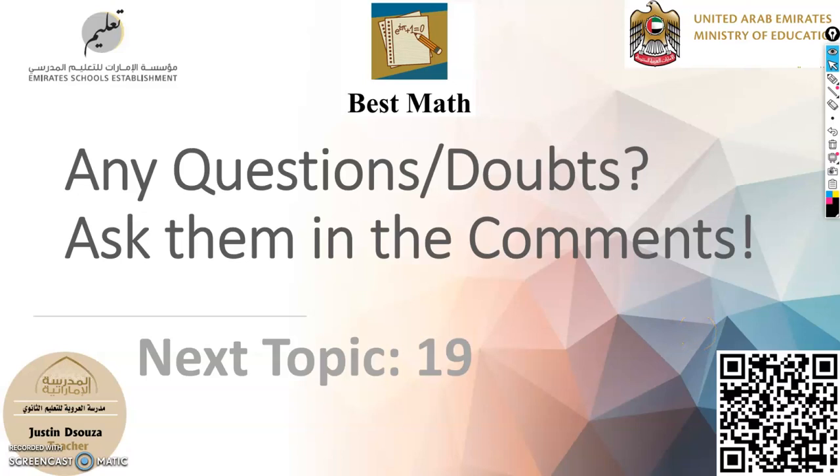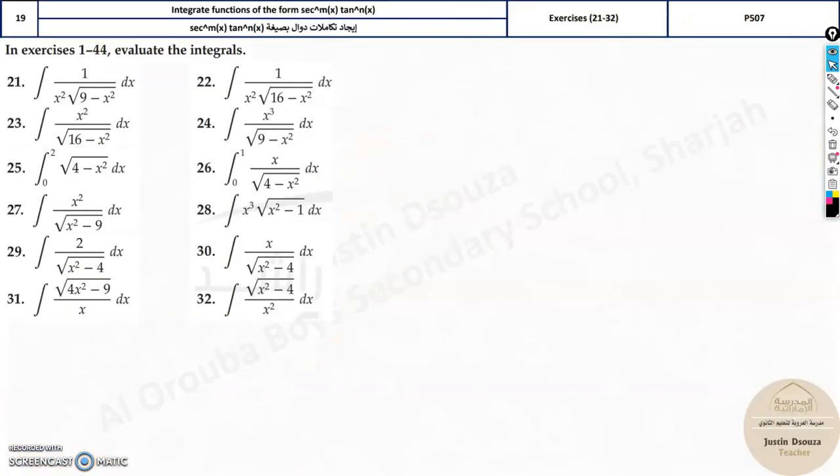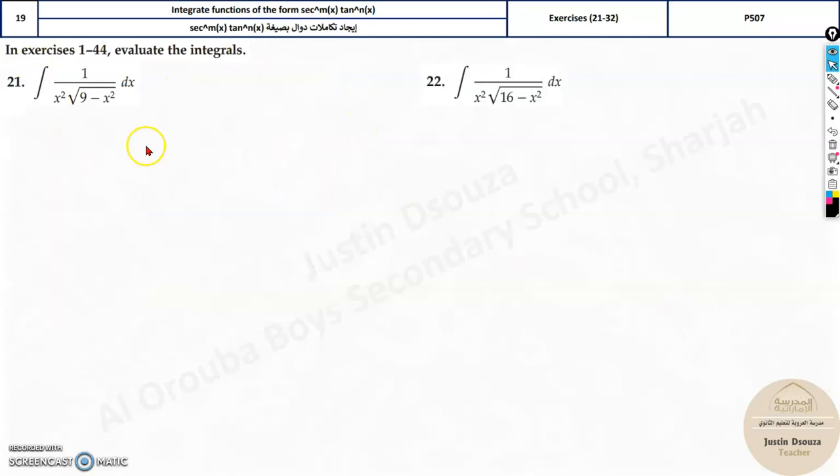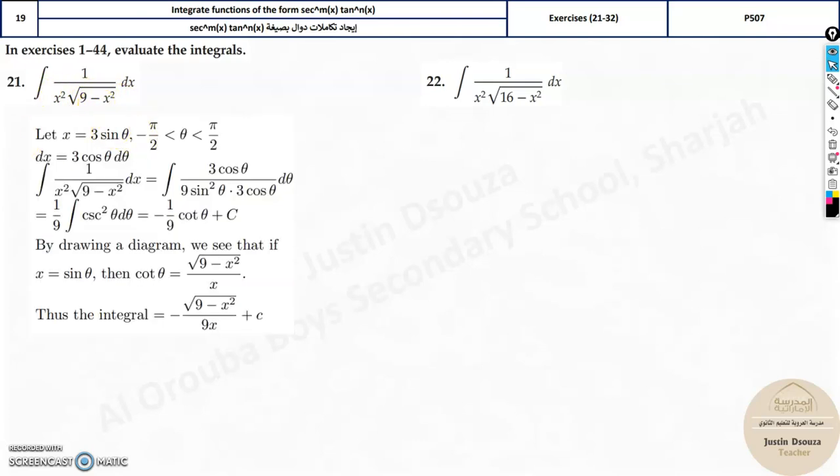Now we move to the 19th topic. It is again on integration and trigonometry. It is considered to be one of the most trickiest topics because it's not that easy. You need to assume and all that. For example, over here, this is related to sine inverse formula. You have to assume sine thetas, and then rearrange this and then solve it. You might have come across this in the regular classes. This is the all-long method.